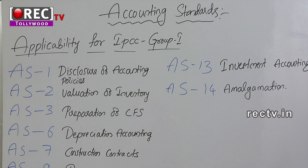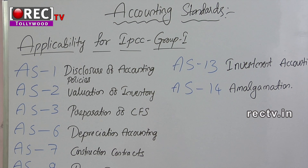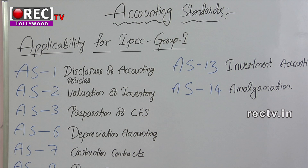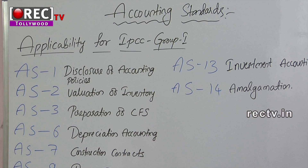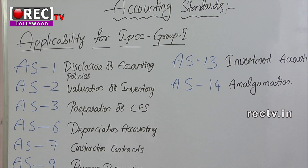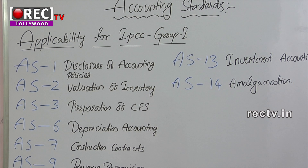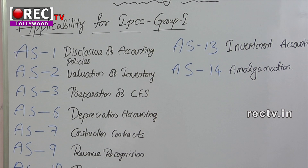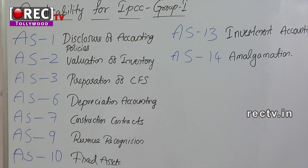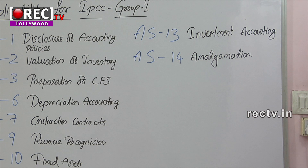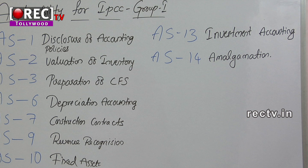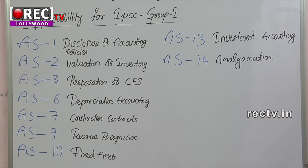Today we are going to discuss accounting standards. First, applicability for IPCC Group 1. The standards applicable for IPCC Group 1 Accounts are: AS 1 Disclosure of Accounting Policies, AS 2 Valuation of Inventory, AS 3 Preparation of CFS, AS 6 Depreciation Accounting, AS 7 Construction Contracts, AS 9 Revenue Recognition, AS 10 Fixed Assets, AS 13 Investment Accounting, and AS 14 Amalgamation.